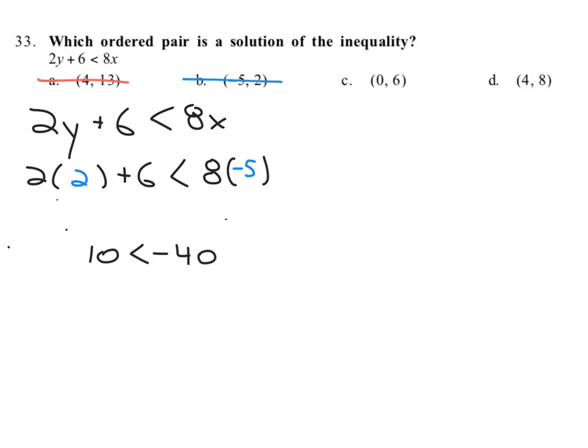Okay? Let's keep going. Let's try 0, 6. 0 for x. 6 for y. And when we calculate it through, 2 times 6 is 12. Plus 6 is less than 8 times 0 is 0. Or 18 is less than 0. Positive numbers are never less than 0. So it is not c.